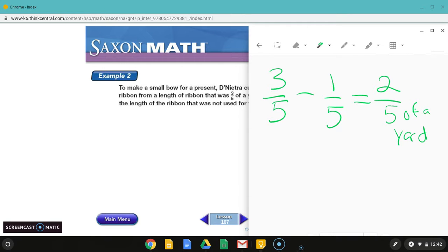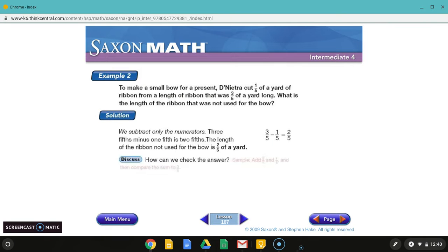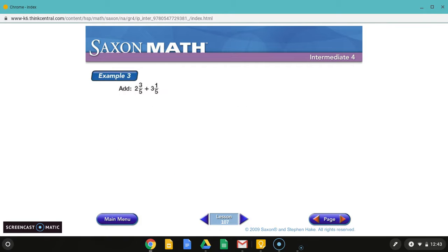A way to check it, you can take your difference here, two-fifths, and add it to the smaller fraction. And you should get this bigger fraction here. That is how you can check if you want to see if you got it right.